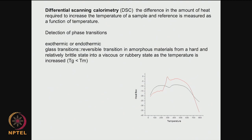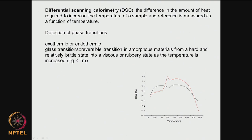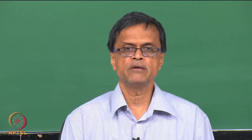Similar to TGA, we also have differential scanning calorimetry (DSC). It measures the difference in the amount of heat required to increase the temperature of a sample. In TGA we plot weight loss versus temperature; in DSC we plot heat flow versus temperature. If converting a material from solid to liquid we need to input heat — heat flow is positive. Converting from liquid to solid is the reverse — heat flow is negative. So we can detect phase transitions.